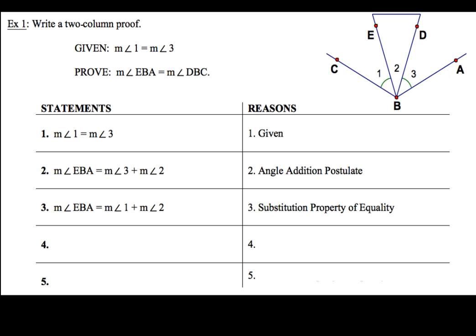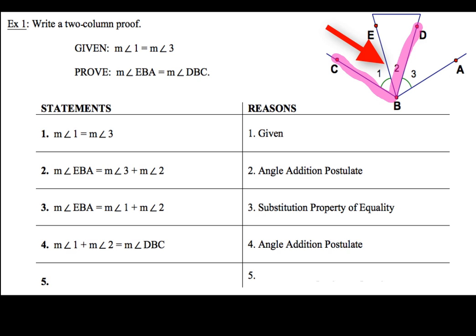On to the fourth statement. Similar to the second statement, we're going to use the angle addition postulate, but this time for the other angle. The measure of angle 1 plus the measure of angle 2 equals the measure of angle DBC. I can see that in my diagram, and the reason is the angle addition postulate.